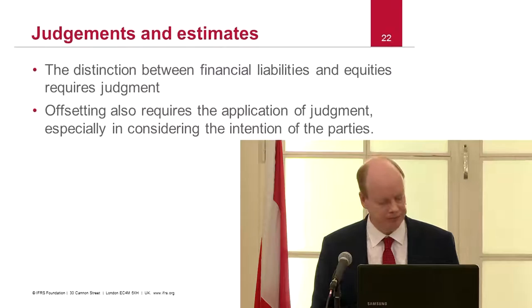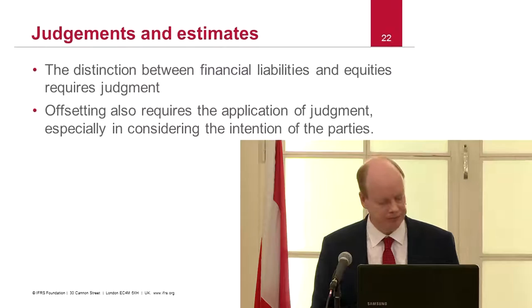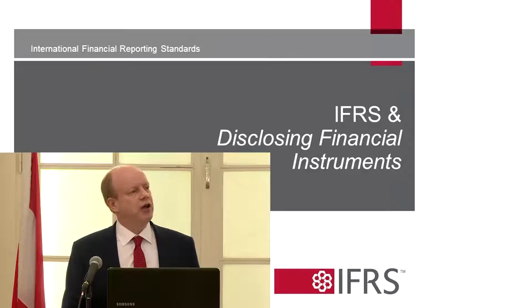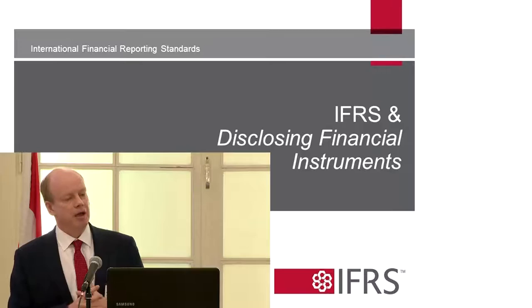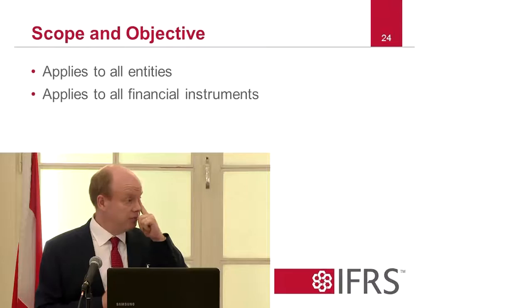Now let's look at IFRS 7, which covers all the disclosure requirements of financial instruments. These disclosure requirements used to sit in IAS 32 but were brought into IFRS 7, and you now find them all in one place. The scope of IFRS 7 applies to all entities and to all financial instruments.